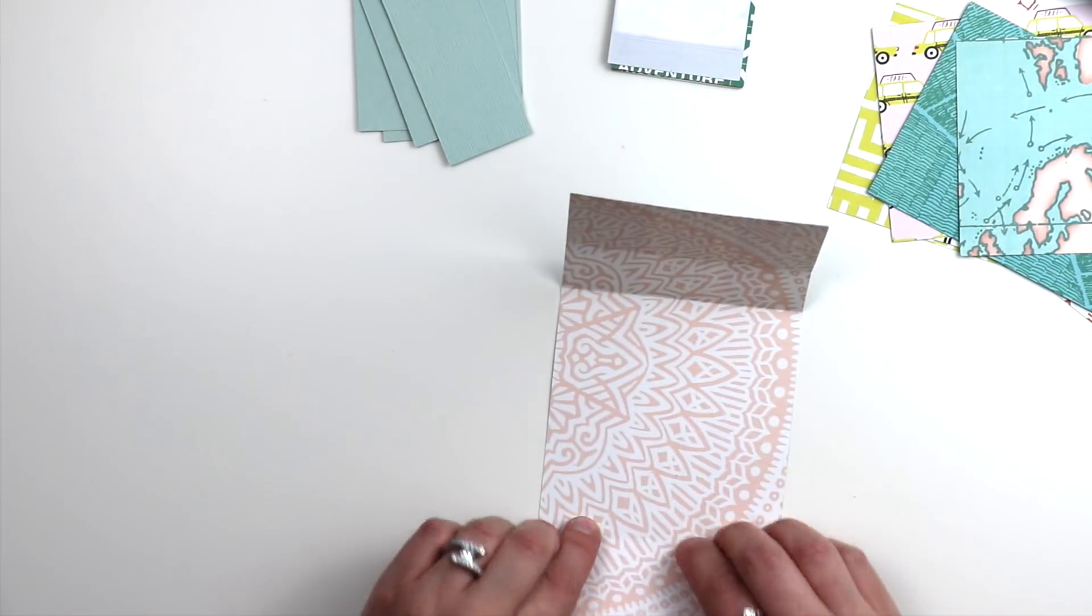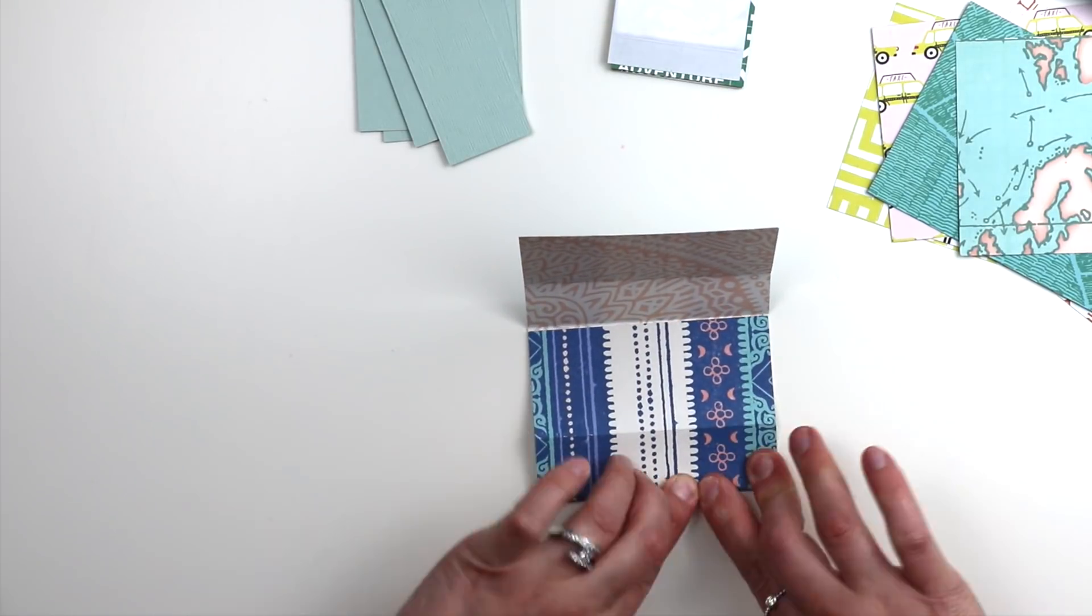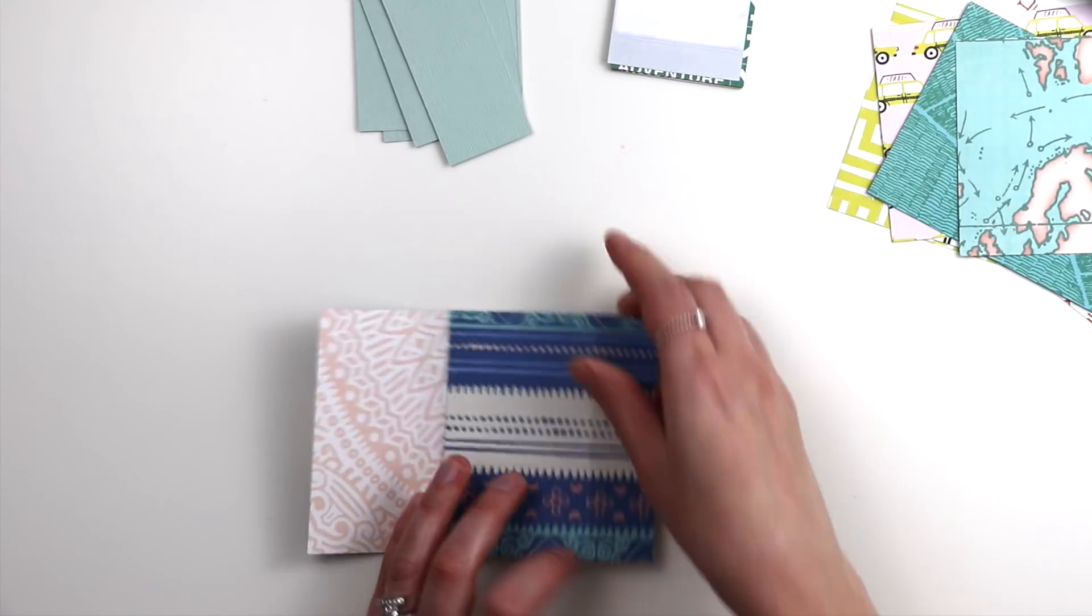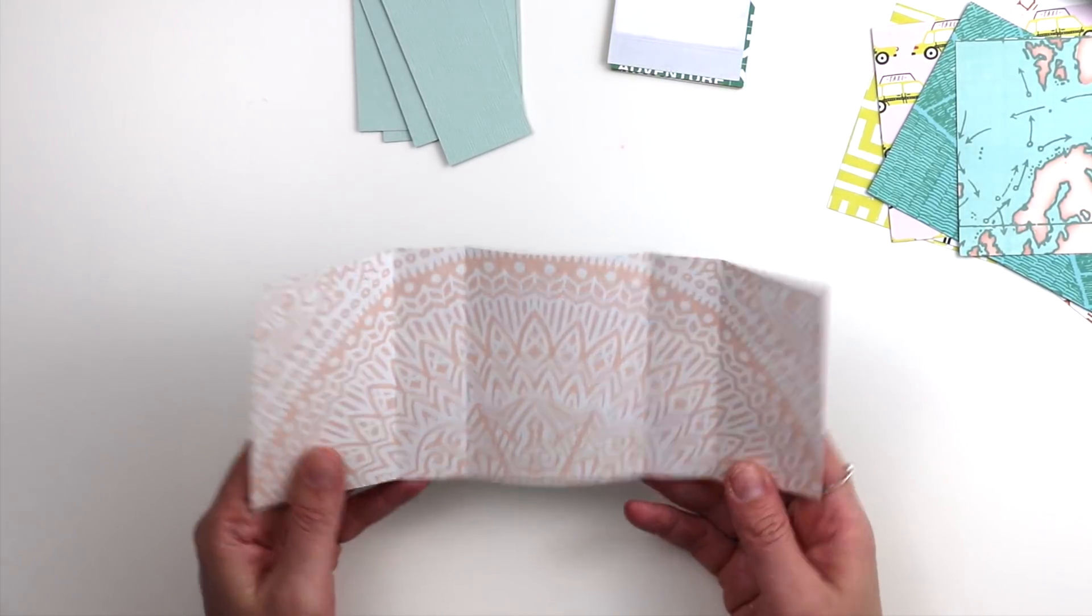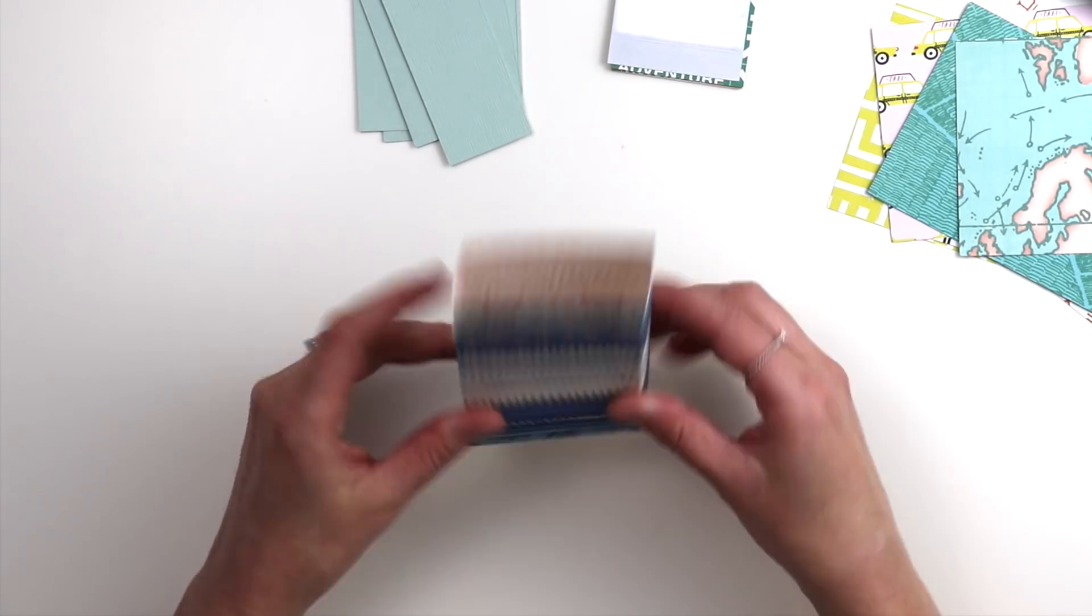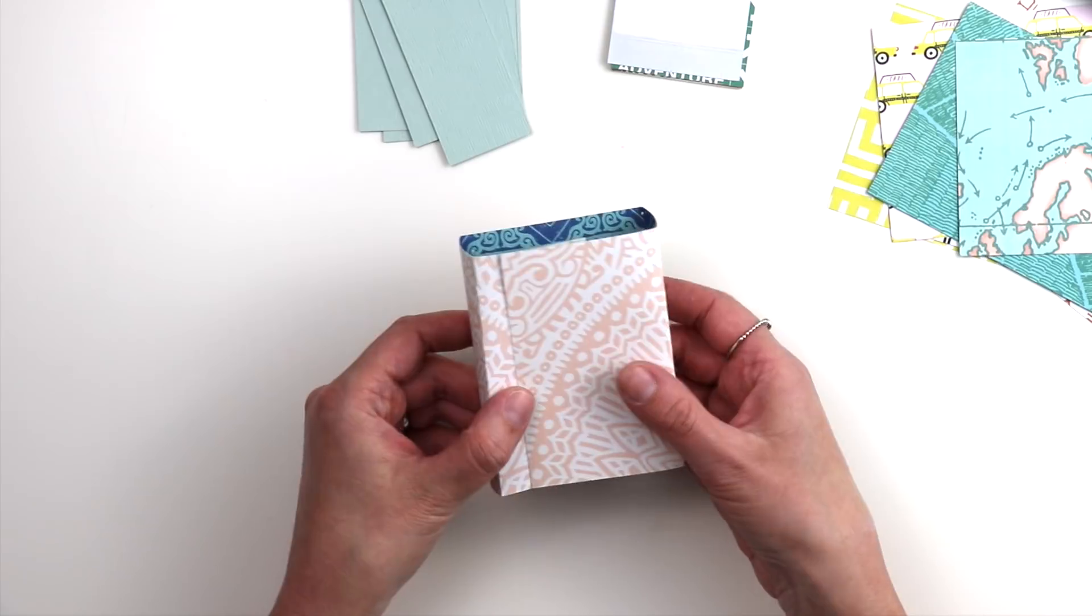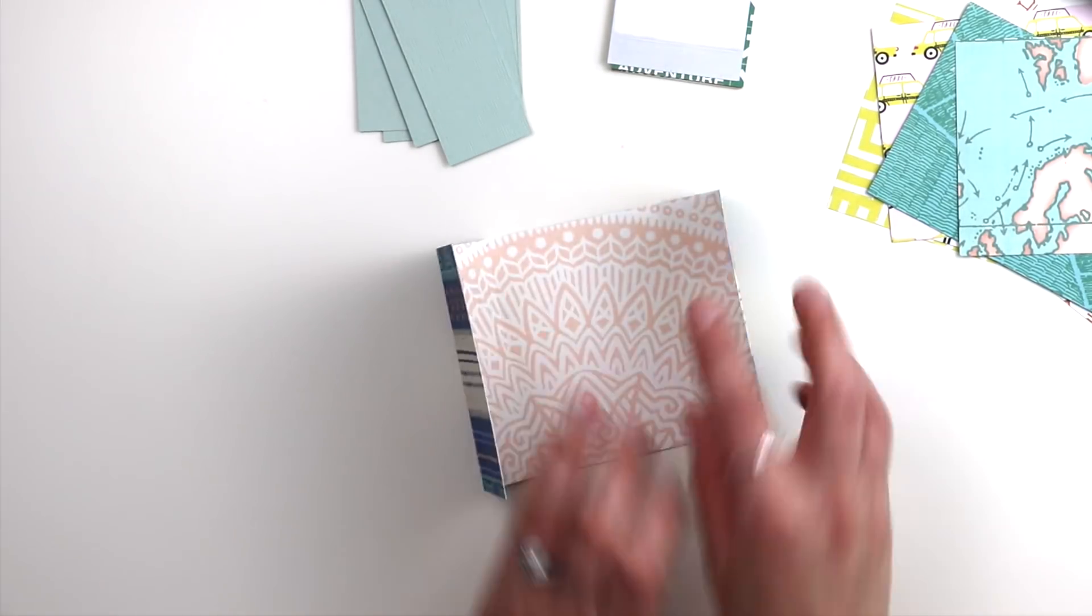Everything is from the Here and There collection and there are score lines. You can't see them well in the camera but they're there, so you just want to fold on all of the score lines and this creates the base of the mini album. I couldn't decide which side I wanted showing on the outside, whether it was the blue or the pink. So I quickly flipped it over so the pink was showing, then I decided I want the blue showing.